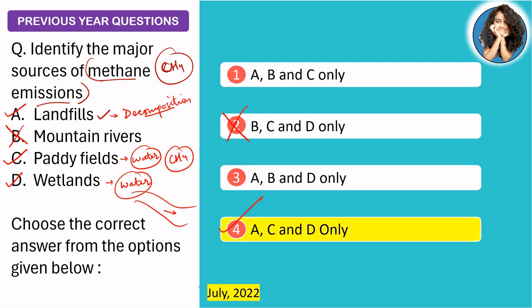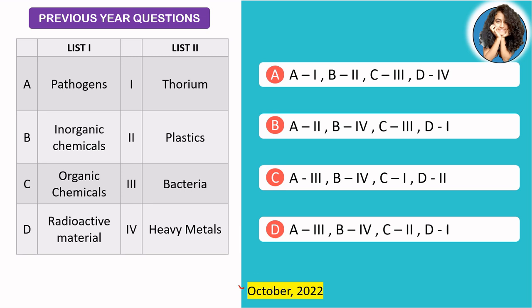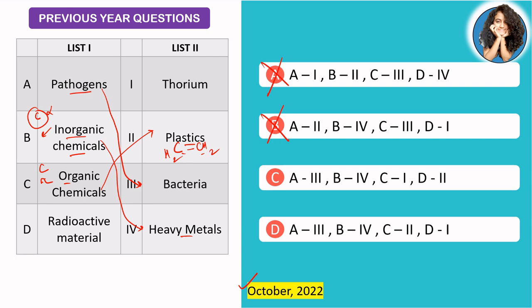This last option is from July 2022. The next question involves matching water pollutants to their categories. Pathogens are easy to match. For inorganic chemicals — since organic means carbon-containing, inorganic chemicals do not contain carbon. Plastics contain carbon (CH2 repeat units), so they are organic. Thorium is a radioactive metal and matches the radioactive category. So A-third for bacteria, B-fourth for inorganic, and thorium for the radioactive category.